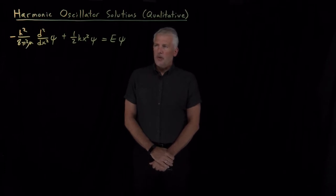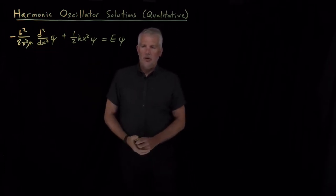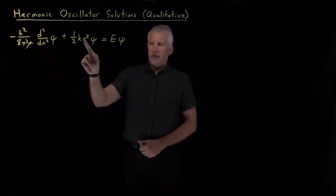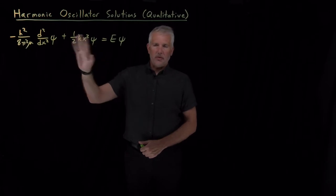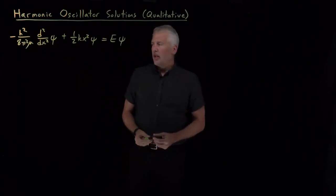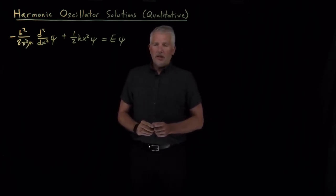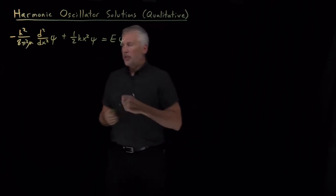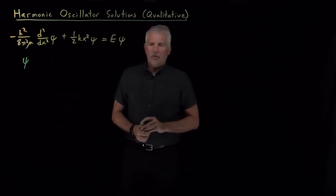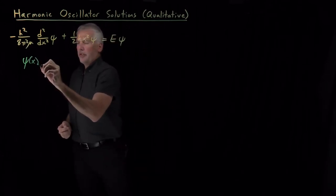Now it's time to talk about which wave functions actually solve the harmonic oscillator Schrödinger equation. What functions are there that we can take the second derivative of, add them to x squared times the same function with various constants, and get back the function we started with? We can consider trial and error solutions to the Schrödinger equation and learn something about what type of functions will solve it.